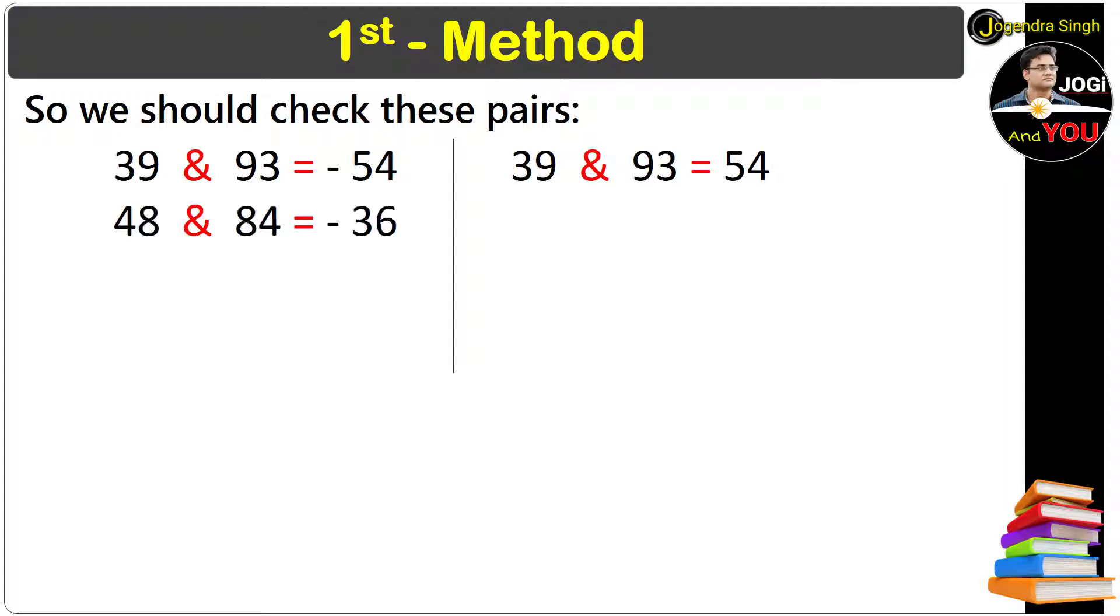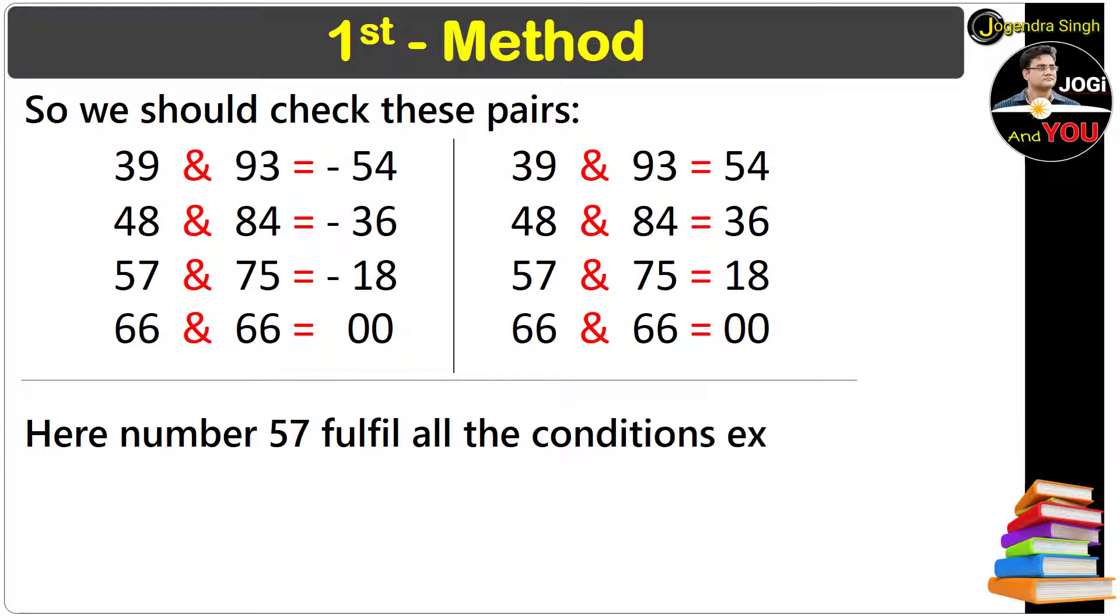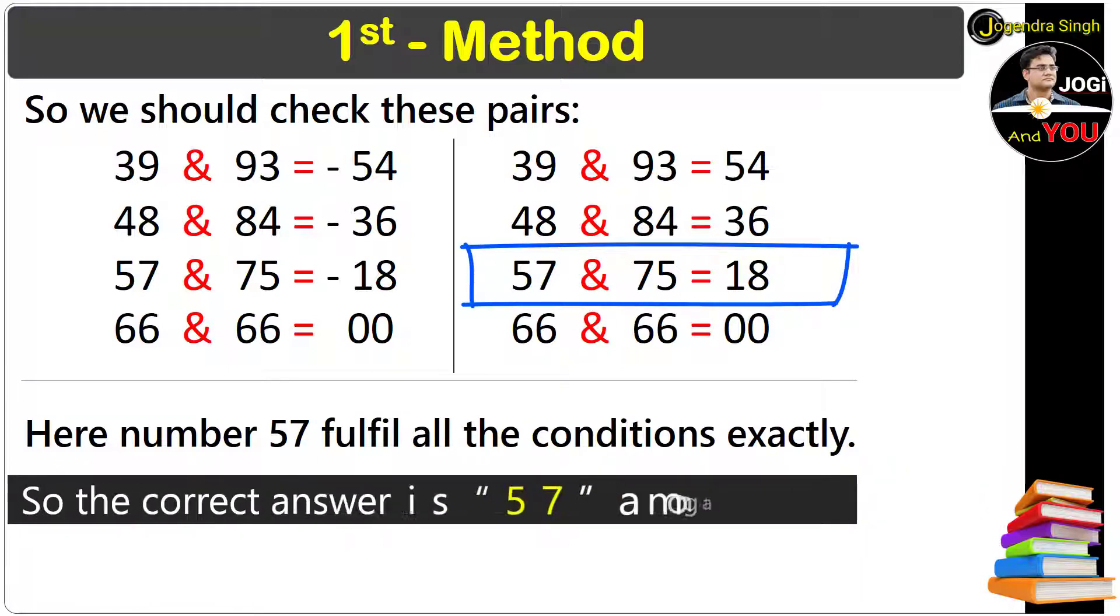This is minus 36, this difference is 36. Here is minus 18 and plus 18, and 0 and again 0. Here number 57 fulfills all the conditions exactly. That's why the correct answer is 57 among all of them.